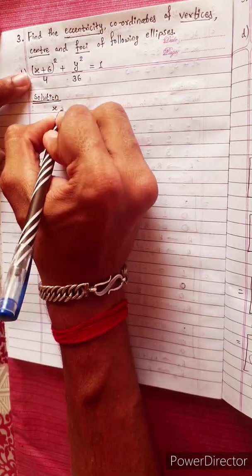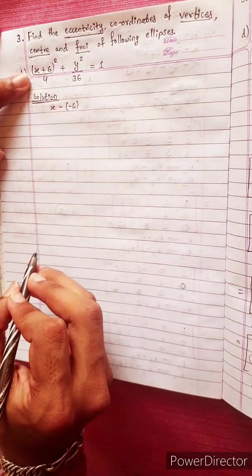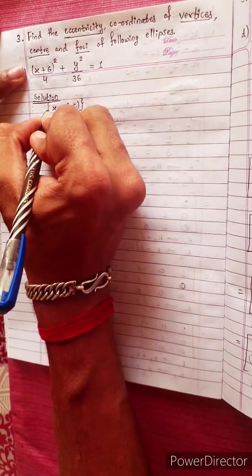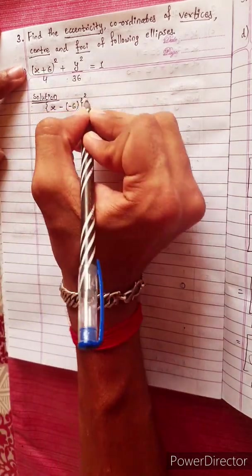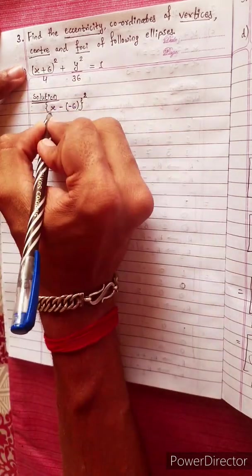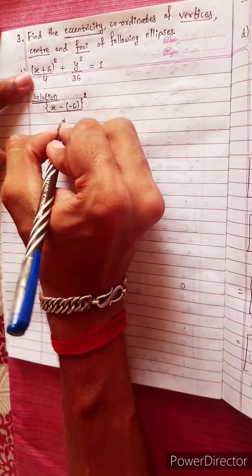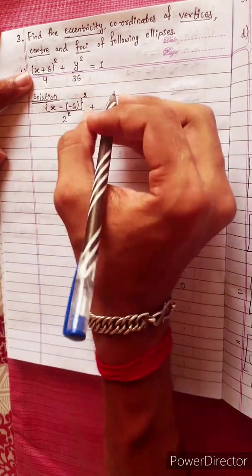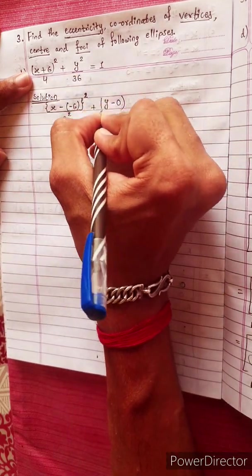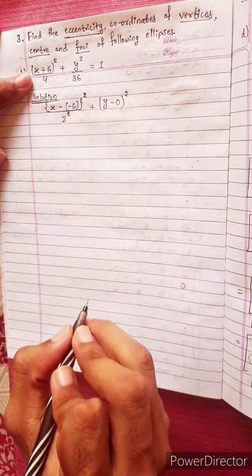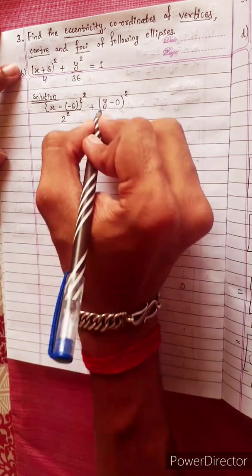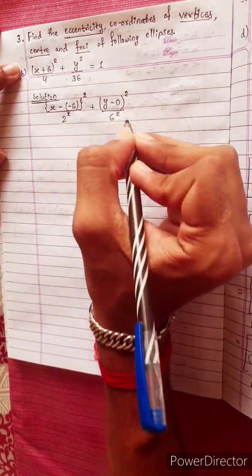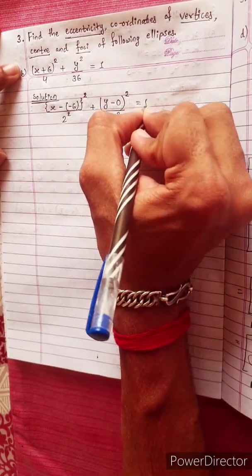Write it as: (x minus (-6))² divided by 2 squared, plus (y minus 0)² divided by 6 squared, equals 1. So we get the equation divided by 36, giving 1 over 6 squared, equal to 1.